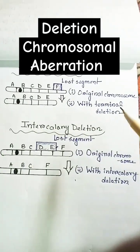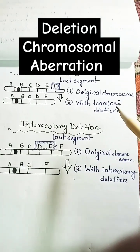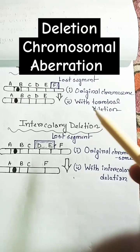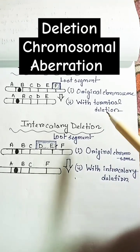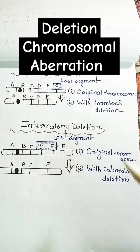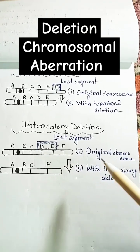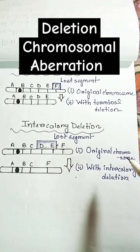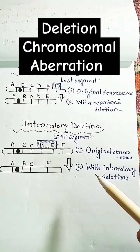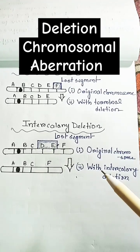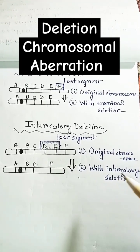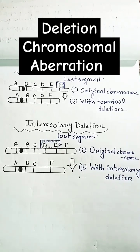This is the original chromosome and this is the chromosome with terminal deletion. And in this case, this is the original chromosome and this is the chromosome with intercalary deletion.